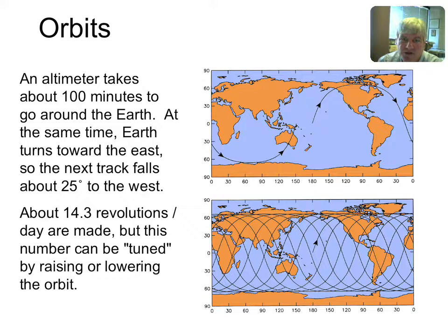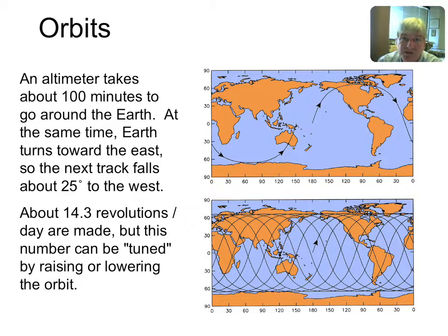At the orbital altitude of 800 kilometers, where GEOSAT and ERS-1 operated — the satellites giving us most of our tectonic information — it takes about 100 minutes to go around the Earth. While the satellite orbits, the Earth turns so the next track falls about 25 degrees west of the previous one. It takes about 14.3 revolutions per day. You can tune the orbit by boosting or lowering the satellite's altitude so the track pattern gives you what you want.